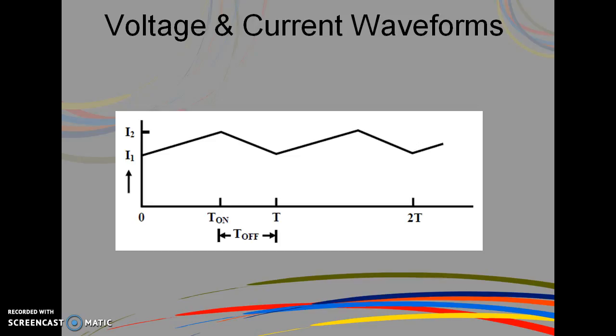When the switch S is put off during the time period between T on to T off, the off period being T off equals the total time period minus the T on period. As the current through L decreases with its direction being in the same direction as shown, the induced EMF reverses. So the induced EMF is added with the supply voltage, being of the same polarity, thus keeping the current in the same direction. The current decreases linearly in the time interval for the time period T off.